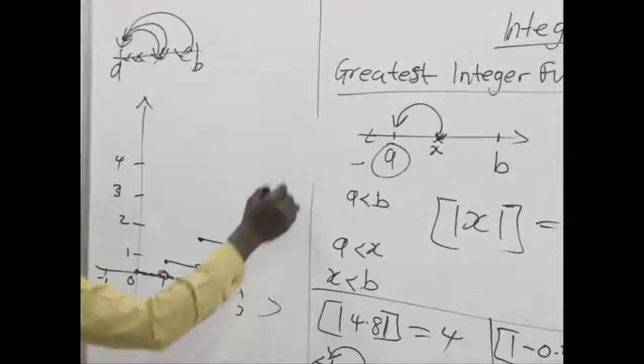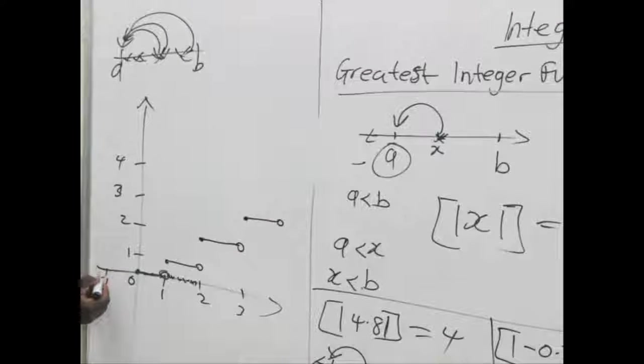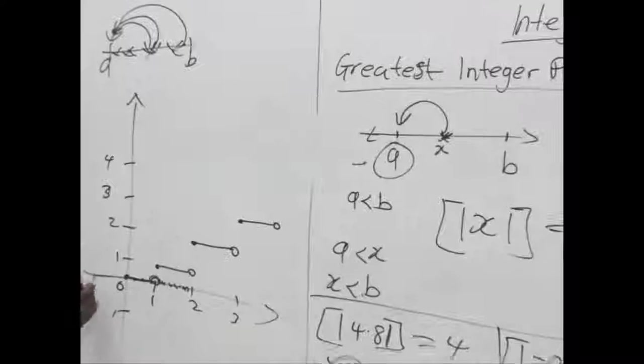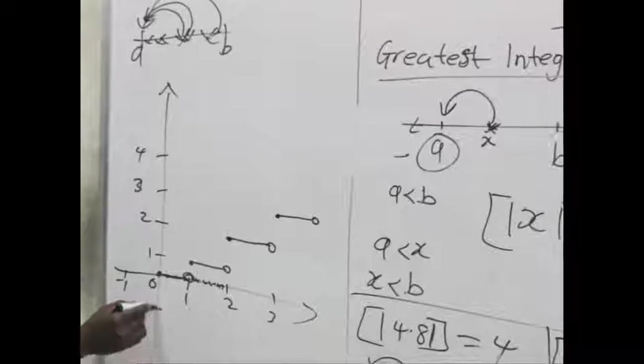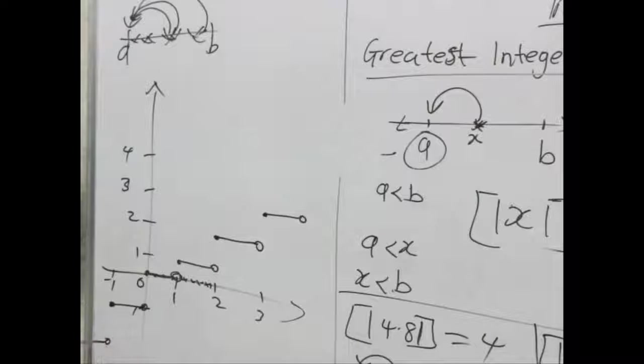So it moves in that direction. When we count down, all values between 0 and negative 1 fall under negative 1, except 0 itself. So in that way, we keep extending the graph. So this is a graph of a greatest integer function.